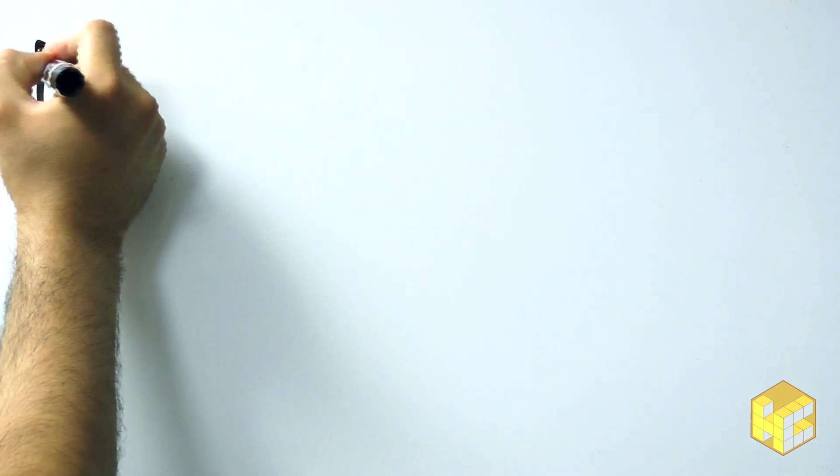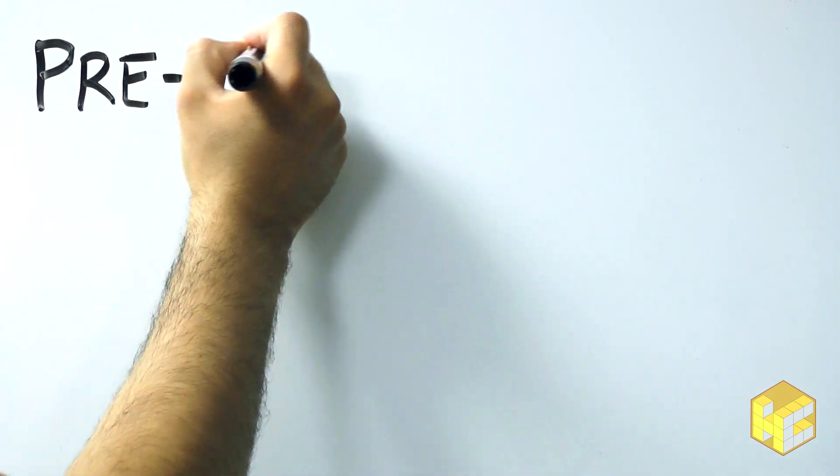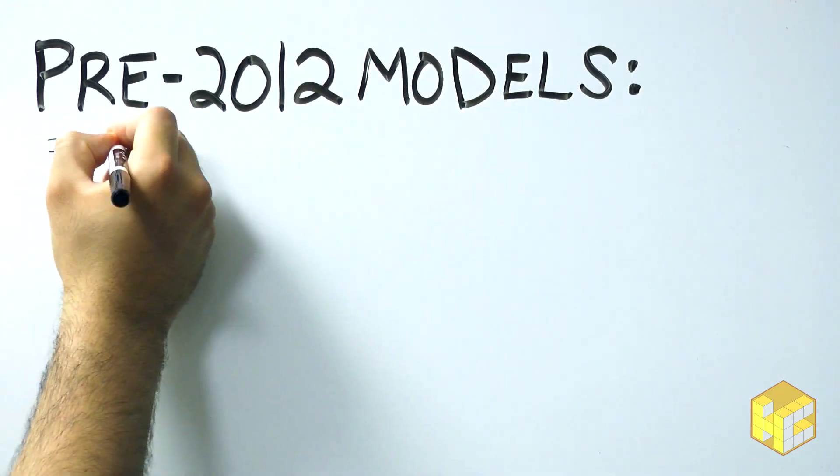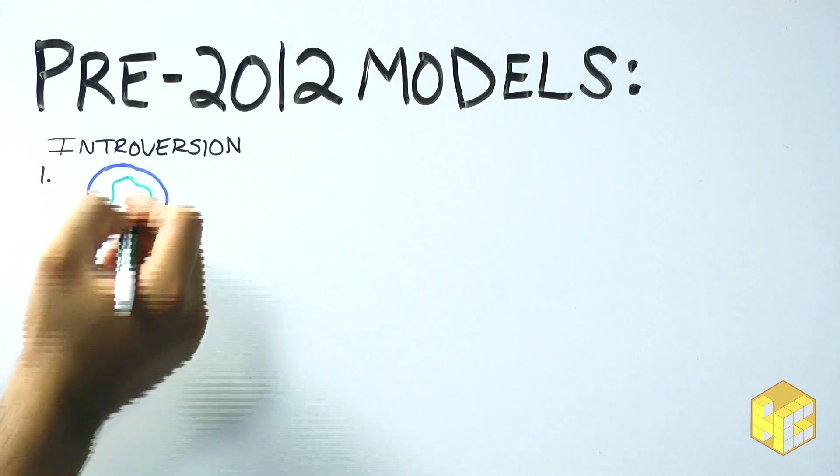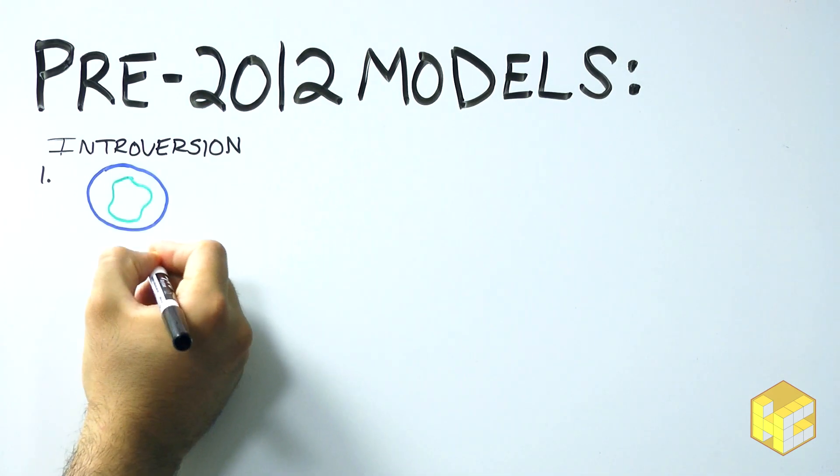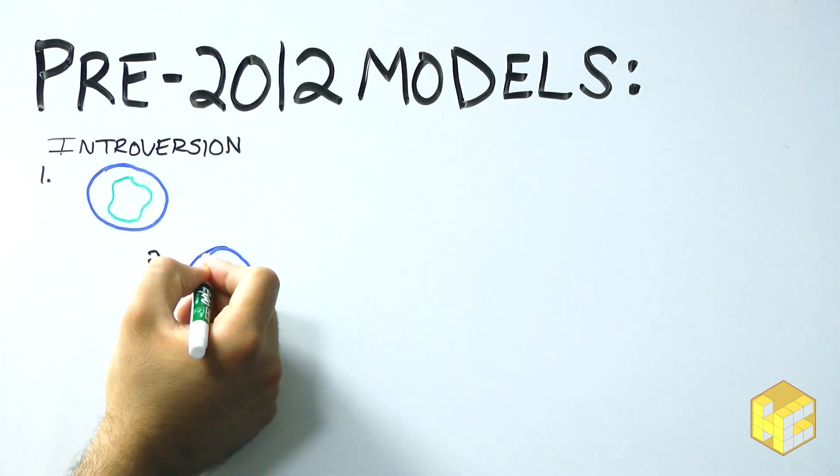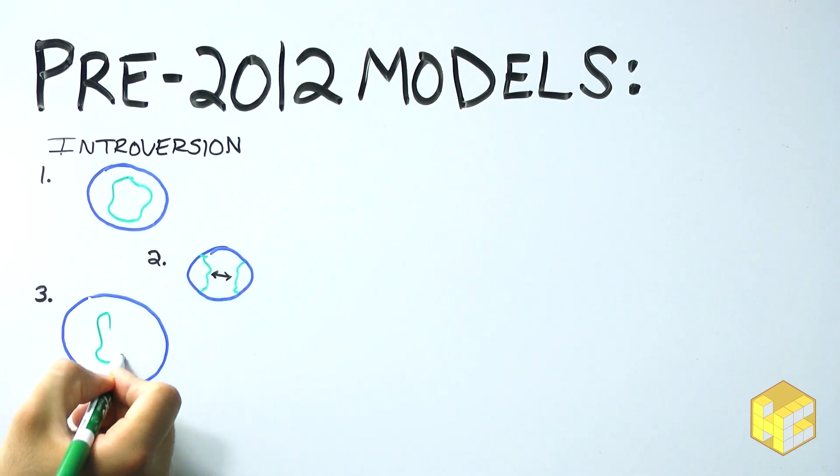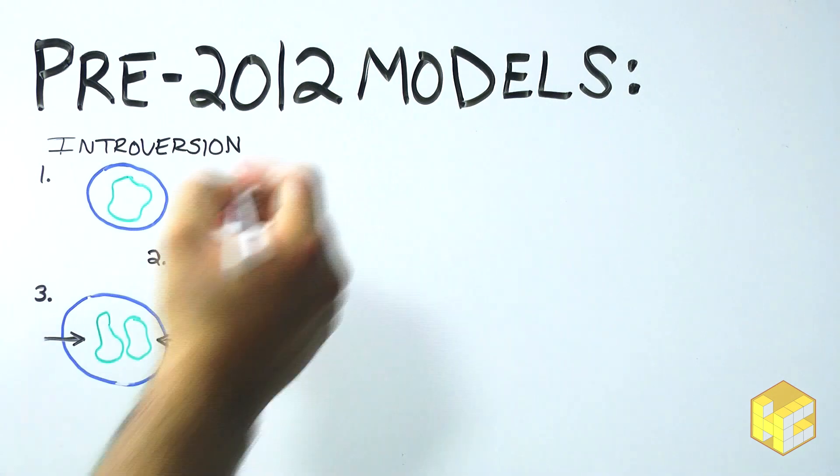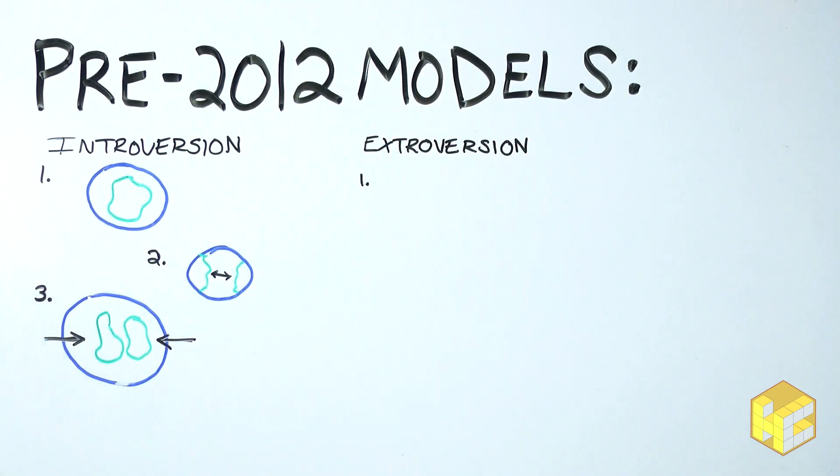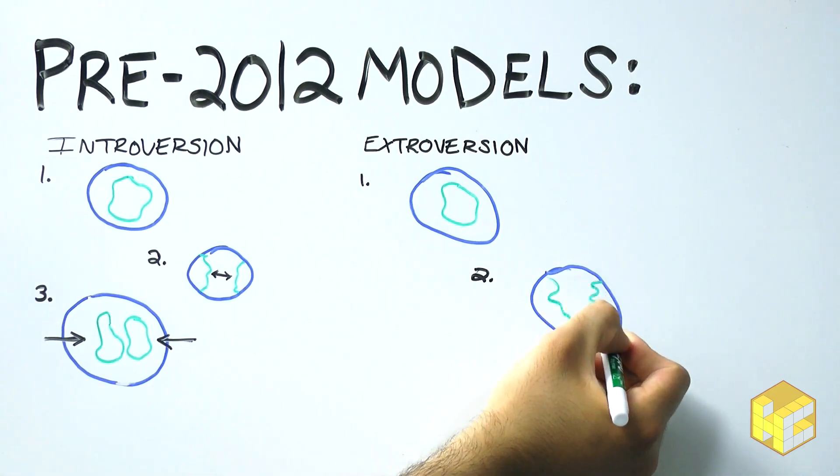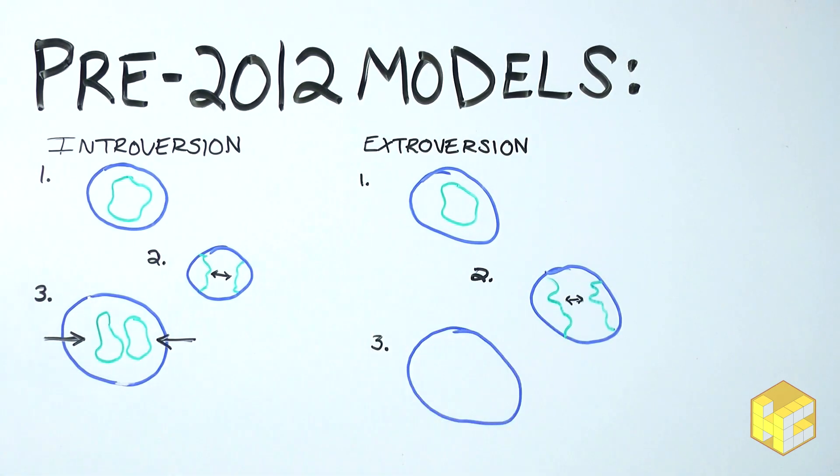Up until 2012, there were two major models for how supercontinents form, introversion and extroversion. According to the introversion model, after a supercontinent rifts apart, the plates eventually reverse their motion and come back together again. So the interior edges of the first supercontinent become the interior edges of the second supercontinent. Alternatively, the extroversion model has plates drifting all the way to the opposite side of the world to meet up again. So the interior edges of the first supercontinent would become the exterior edges of the second.